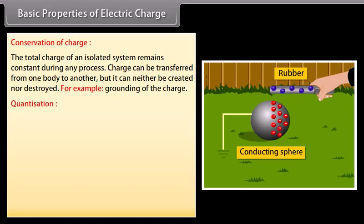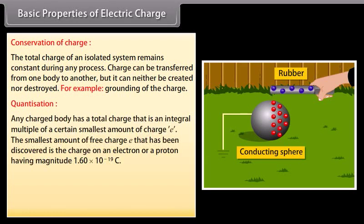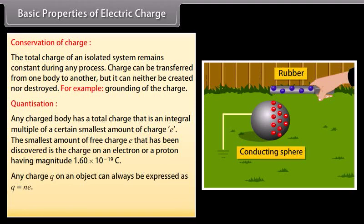Quantization: any charged body has a total charge that is an integral multiple of a certain smallest amount of charge e. The smallest amount of free charge e that has been discovered is the charge on an electron or a proton, having magnitude 1.60 × 10⁻¹⁹ coulomb. Any charge q on an object can always be expressed as q = ne, where n is an integer.